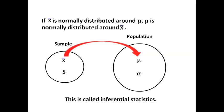Now, if we can do that, if x-bar is normally distributed around mu, then we could reverse that and say mu is normally distributed around x-bar.